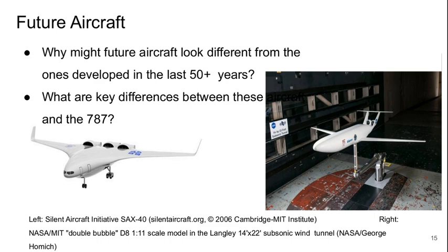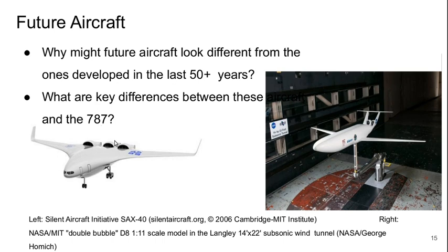Finally, let's get on to future aircraft. Why might aircraft in the future look different from those developed in the last 50 to 70 years? On the left we see the Silent Aircraft Initiative SAX-40, intended to be a long-distance intercontinental commercial airliner. On the right we see the Double Bubble D-8 from MIT and NASA, intended for short-haul domestic flights as a 737 equivalent. The biggest difference between these aircraft and the 787 is the use of boundary layer ingesting propulsion systems, where the engines — rather than hanging under the wings — are located on top of the fuselage at the back, pulling in the boundary layer over the aircraft surface, which reduces the required propulsive power.